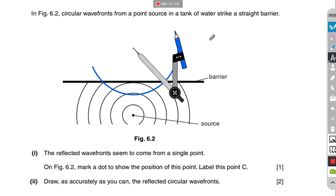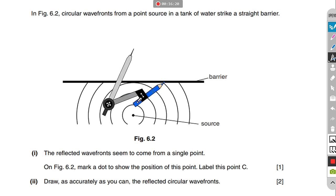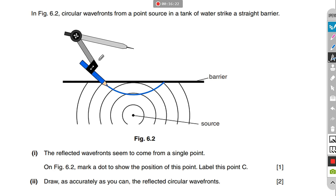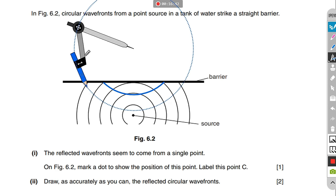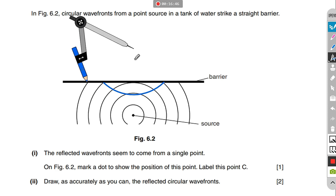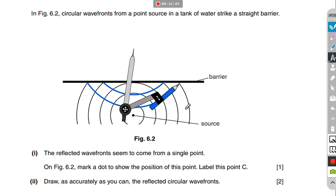Place the compass at the image point and draw the first reflected wave. The first few waves didn't reach the wall yet, so they don't reflect. The third one just reached the barrier but hasn't reflected yet. The fourth one has already been partially reflected. Draw the reflected arcs on both sides connecting to the barrier and the image point.